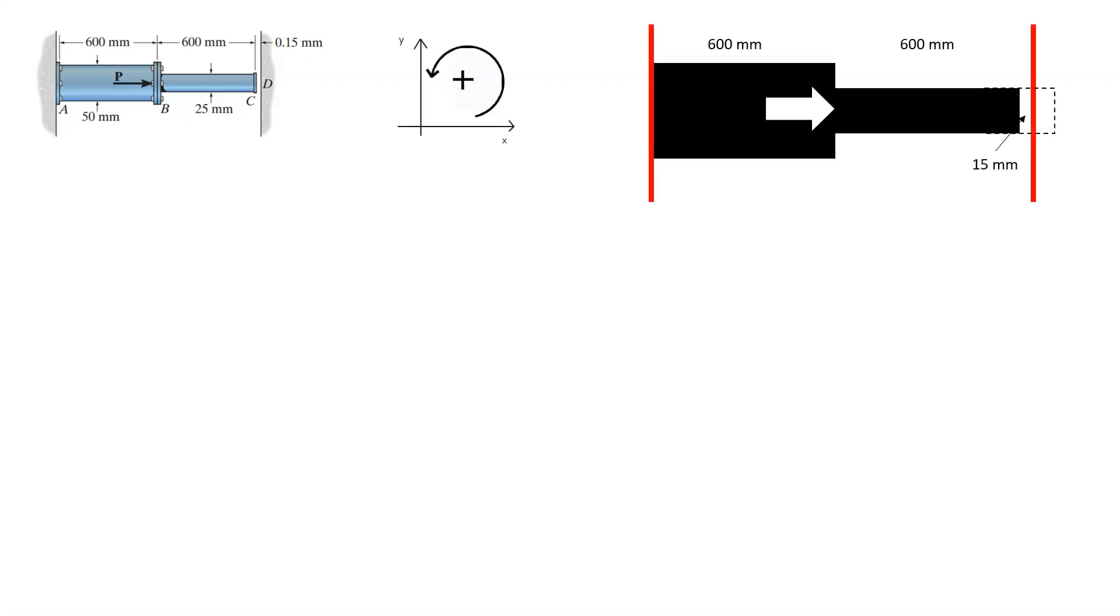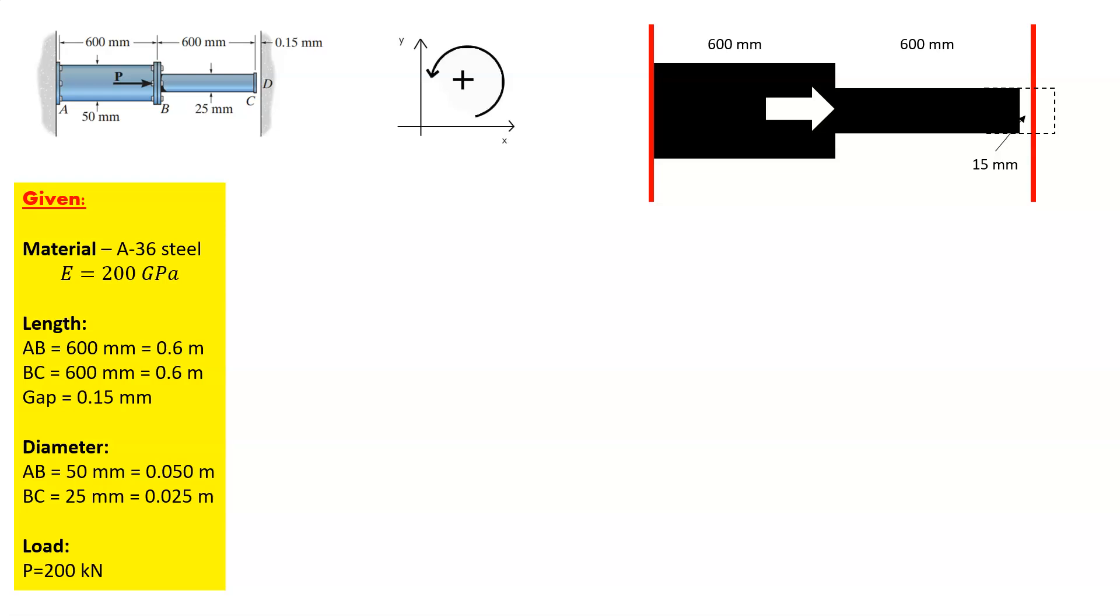So again, the first thing we start off with is with a coordinate system, a free body diagram, and we established everything we've been given. We've been given the material, we've been given the various lengths. Length of both segments AB, BC are both 600 millimeters or 0.6 meters. The diameter of AB and BC is 0.05 meters or 0.025 meters.